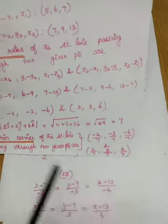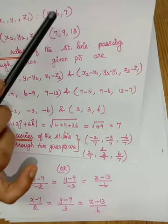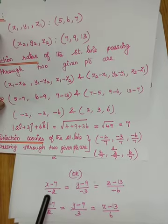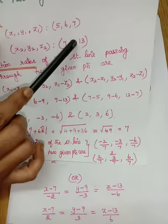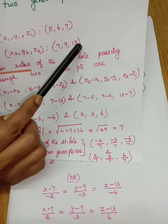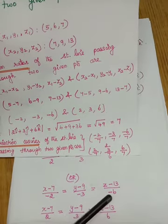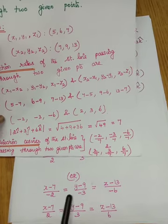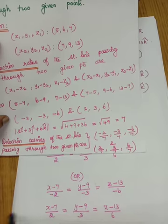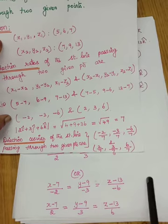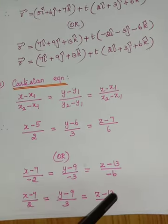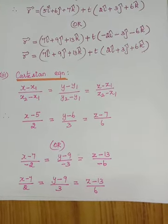Alternatively, if you consider (7, 9, 13) as the first point and (5, 6, 7) as the second, you get (x minus 7)/(minus 2) = (y minus 9)/(minus 3) = (z minus 13)/(minus 6). Since all terms have a common minus sign, this simplifies to (x minus 7)/2 = (y minus 9)/3 = (z minus 13)/6. Both are valid Cartesian equations.